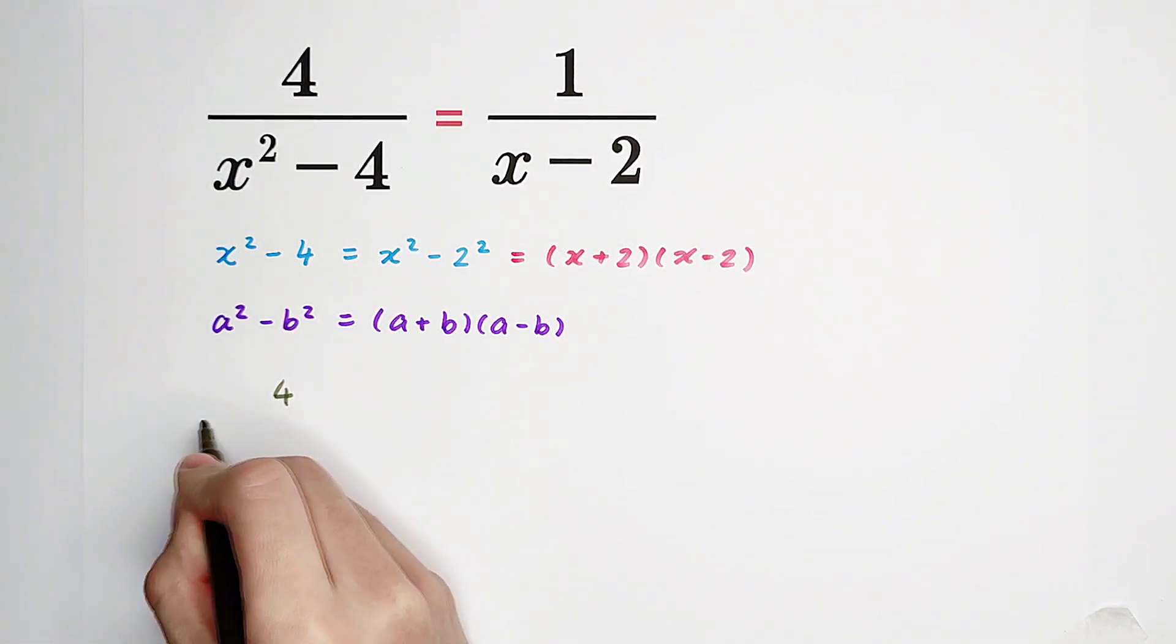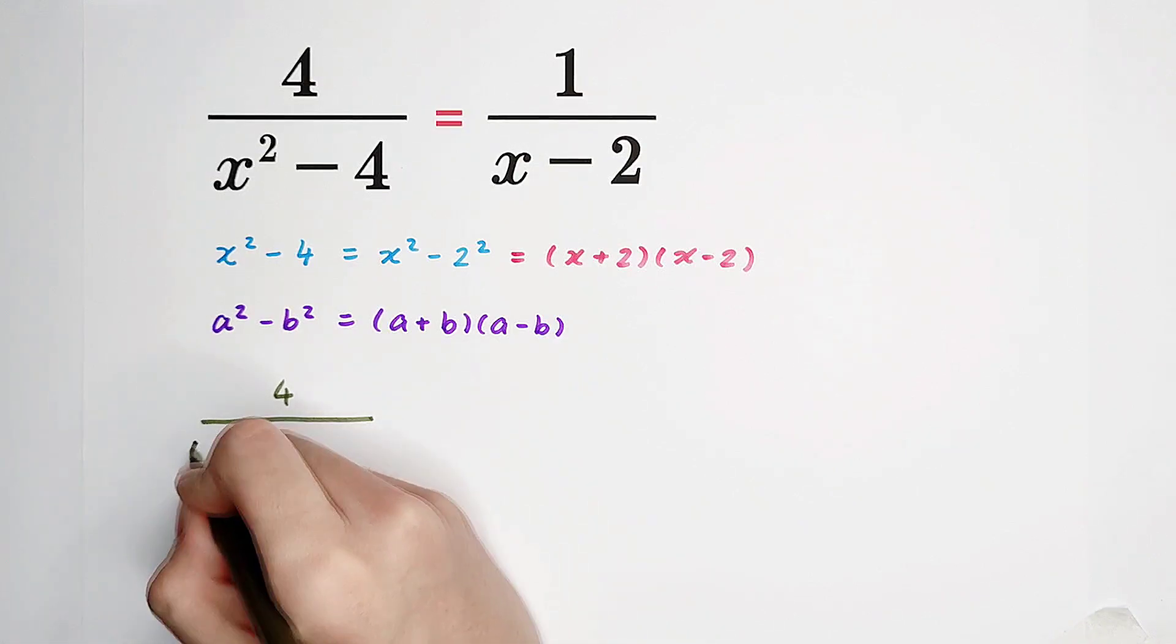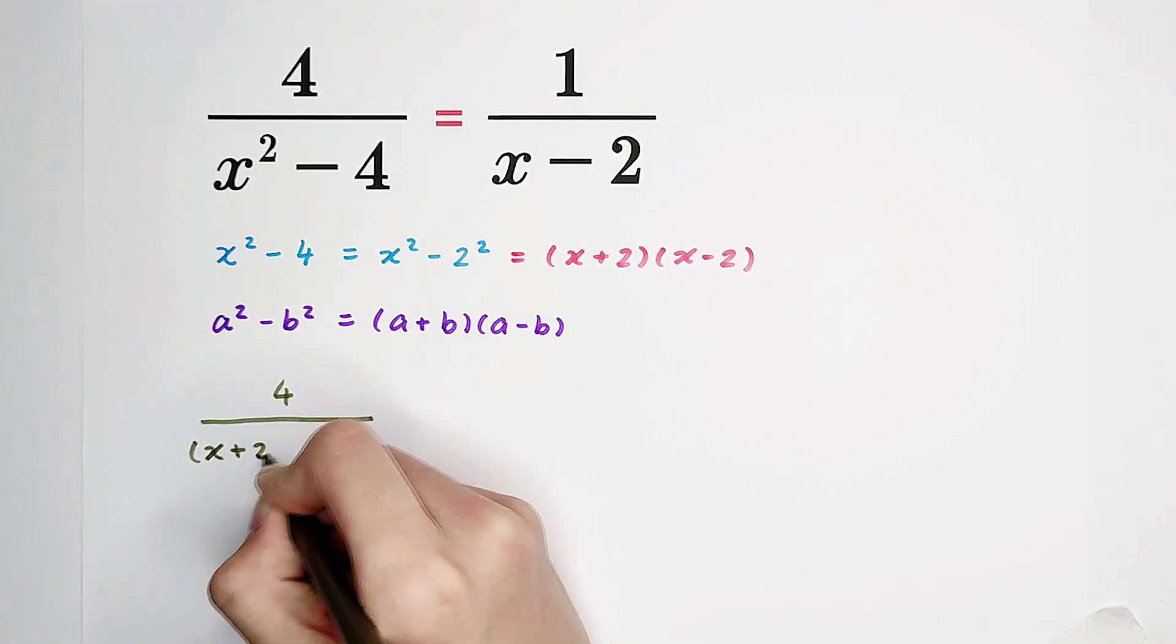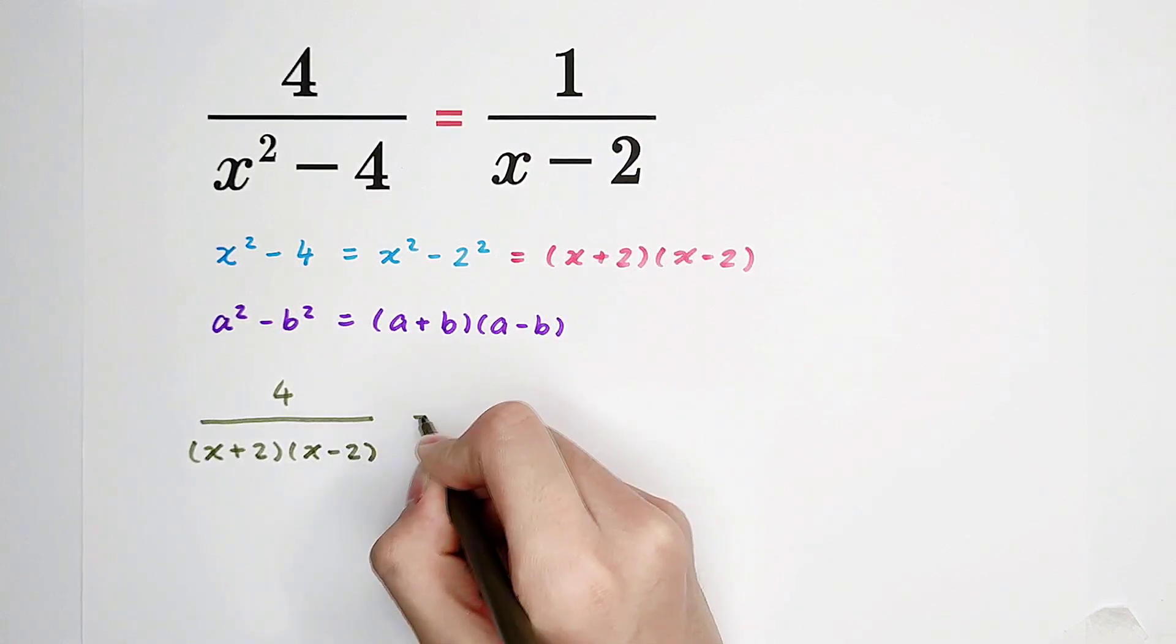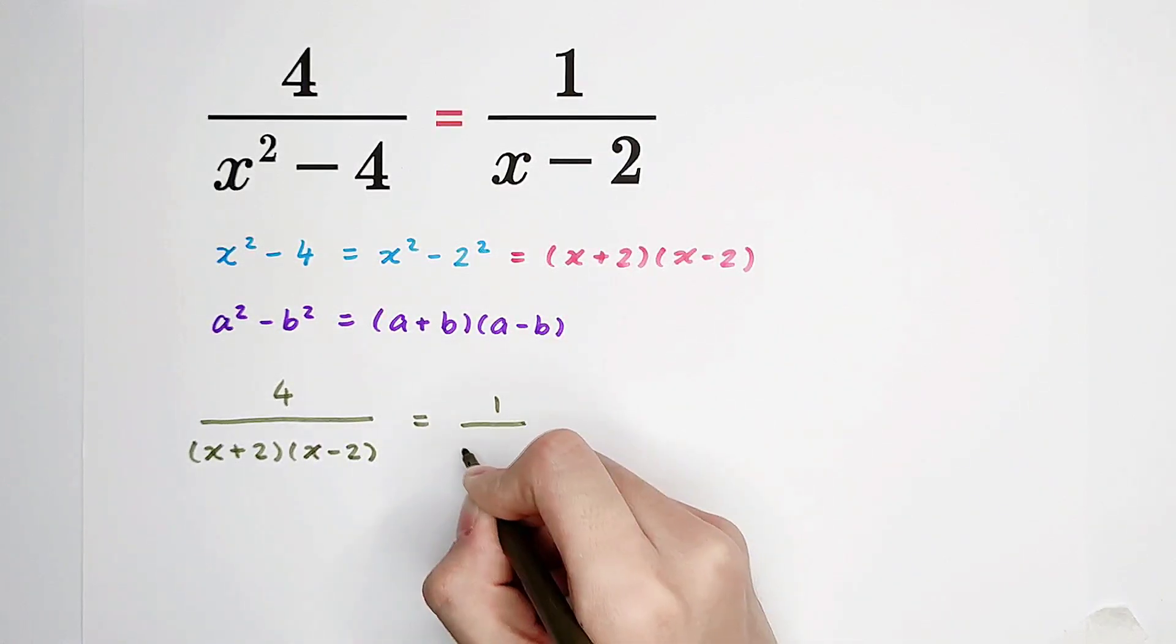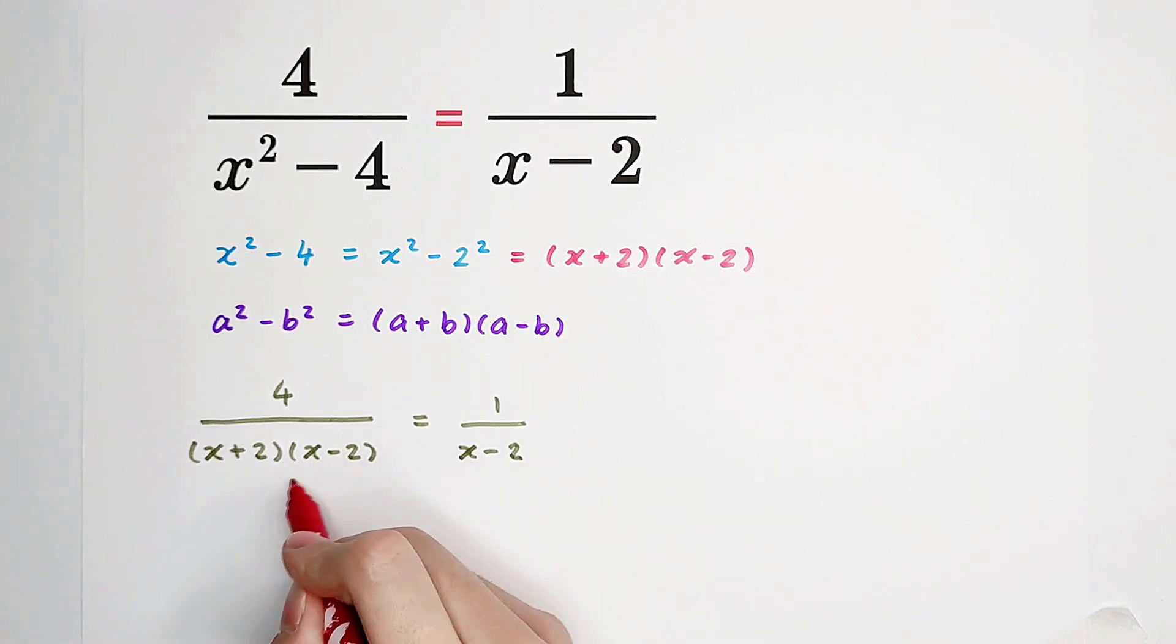So this is 4 divided by x plus 2 times x minus 2 equals 1 over x minus 2. Now you can see x minus 2 appears on both denominators. So what shall we do? We can multiply both sides by x minus 2.